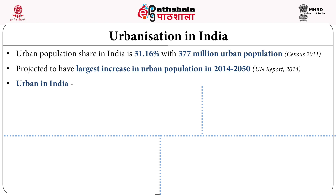With the definition of urban, we see that there are various categories of urban spaces. These are: one, census towns; second, statutory towns; third, urban agglomeration; and fourth, outgrowths.